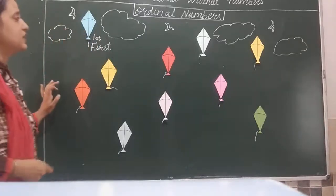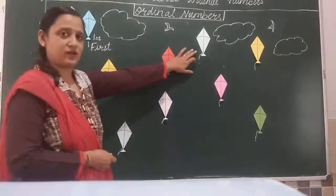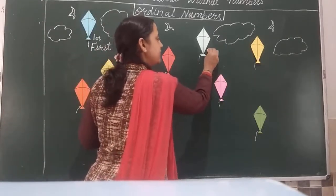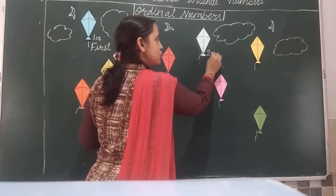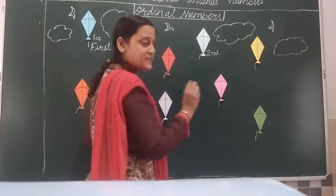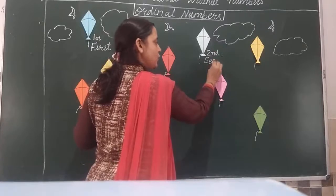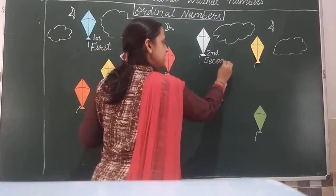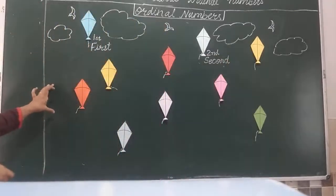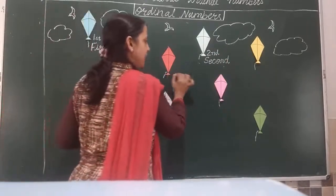Then the kite just below it — this one, this grey kite — so we write their position: second. 2 with small 'n' and 'd', with its sign. S-E-C-O-N-D. Second. And then, students, we can check their heights by drawing a line, like this.